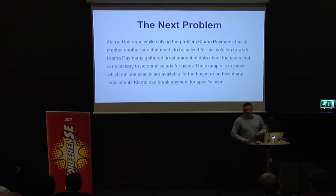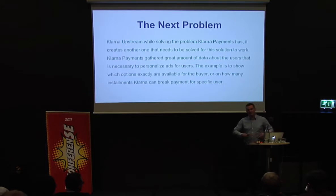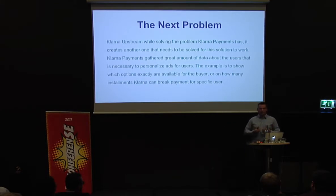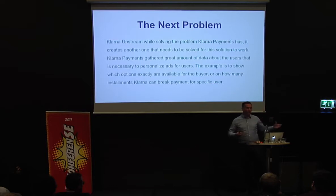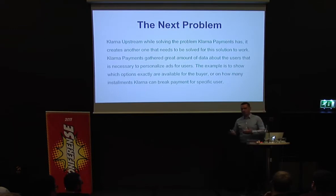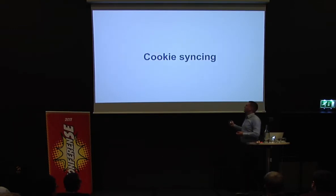So this solves the payments awareness problem and everything seems fine. But then the bot — it creates another problem. Using Klarna AppStream forces us to exchange data that we have, so we can personalize ads. But we need information about the users and the merchants. The thing is that Klarna Payments has that information — Klarna AppStream doesn't. So we need to figure out how we can know what Klarna Payments already knows.